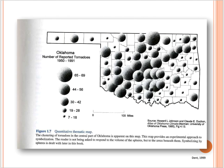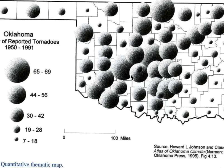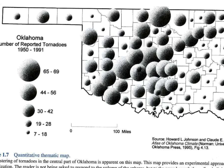We're going to look at examples of proportional symbol maps and how the design can be a concern. This example shows Oklahoma as the base map with the number of reported tornadoes from 1950 to 1991. A larger circle means a higher number of tornado occurrences — from 65 to 69 — compared to a smaller circle representing a lower number from 7 to 18. For design purposes, a small circle overlaid on top of a larger circle makes it hard to see.